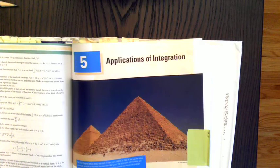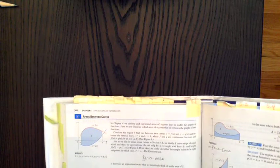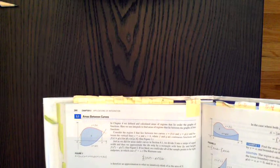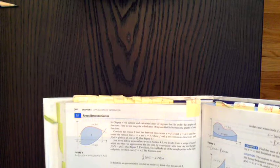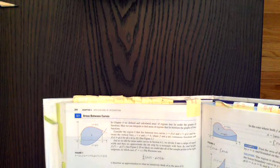Our first is going to be finding the area between curves. In the textbook, this is Section 5.1, or on MyMathLab, it's homework number 7.